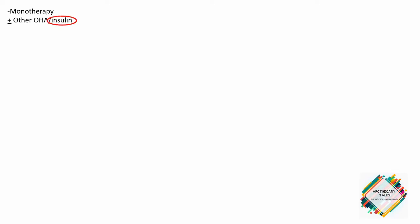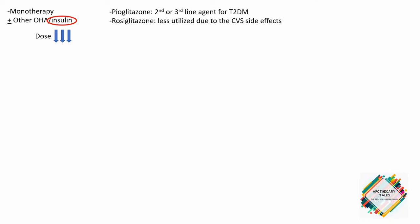Thiazolidinediones can be used as monotherapy or in combination with other glucose-lowering agents or insulin. The dose of insulin may have to be lowered when used in combination with these agents. The ADA (American Diabetes Association) usually recommends pioglitazone as a second or third line agent for type 2 diabetes, while rosiglitazone is less utilized due to concerns regarding cardiac adverse effects.